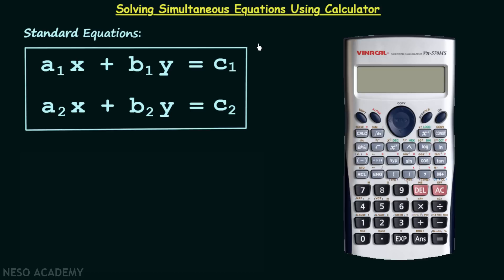So let's begin our discussion. Here I have written the standard equations. We have two equations and two variables x and y, and we know the fact that in order to find out the values of two unknowns it is important to have at least two equations not having more than two unknowns. In the first equation you can see that x and y are the two unknowns, a₁, b₁, and c₁ are the constant values. a₁ is the coefficient of x, b₁ is the coefficient of y.